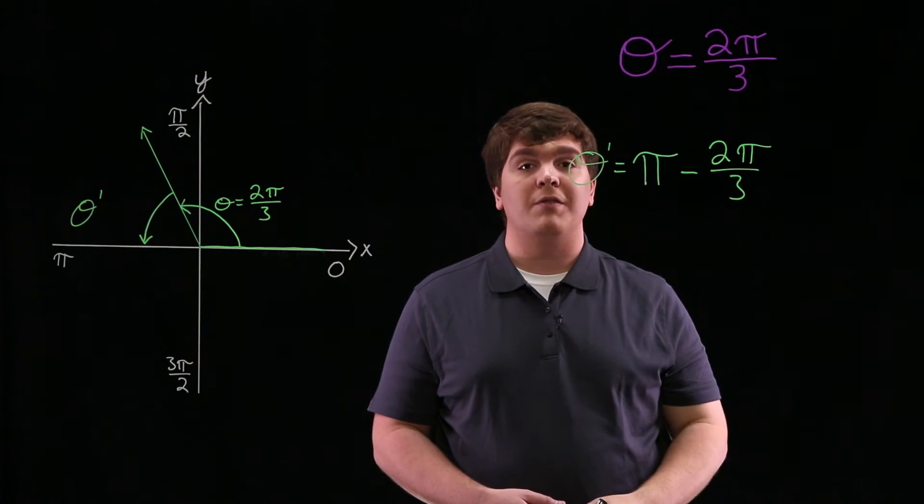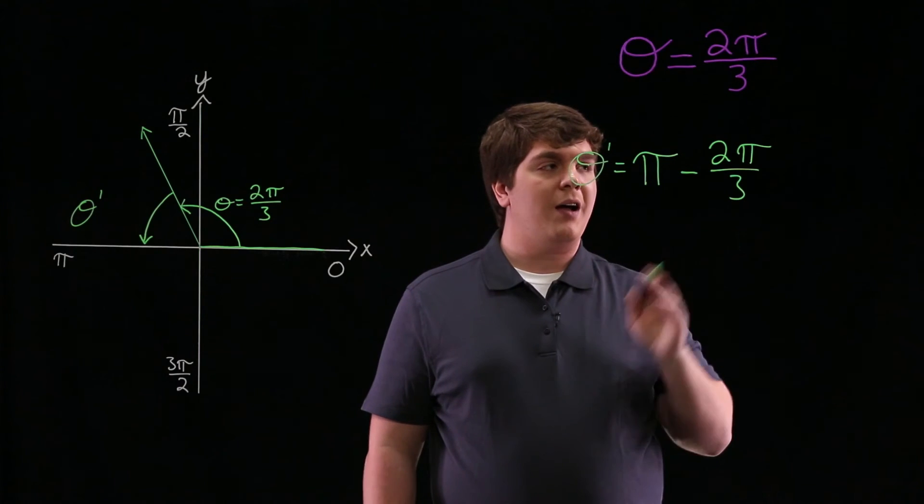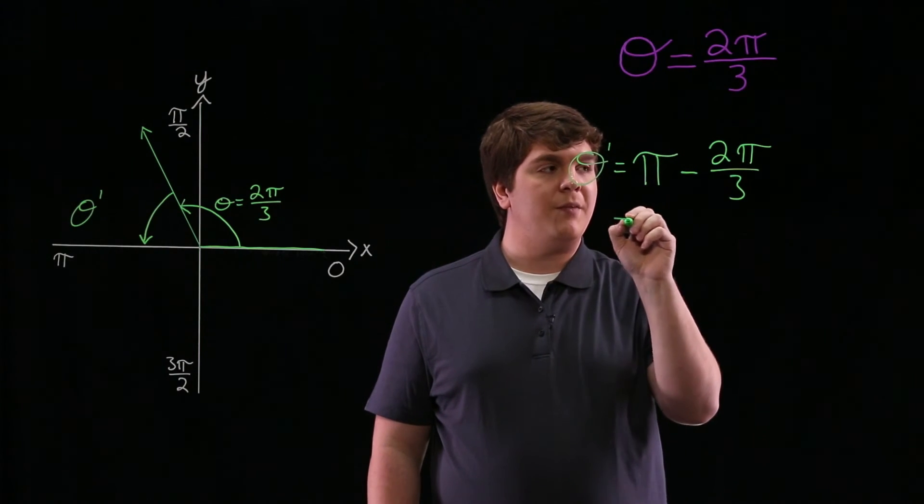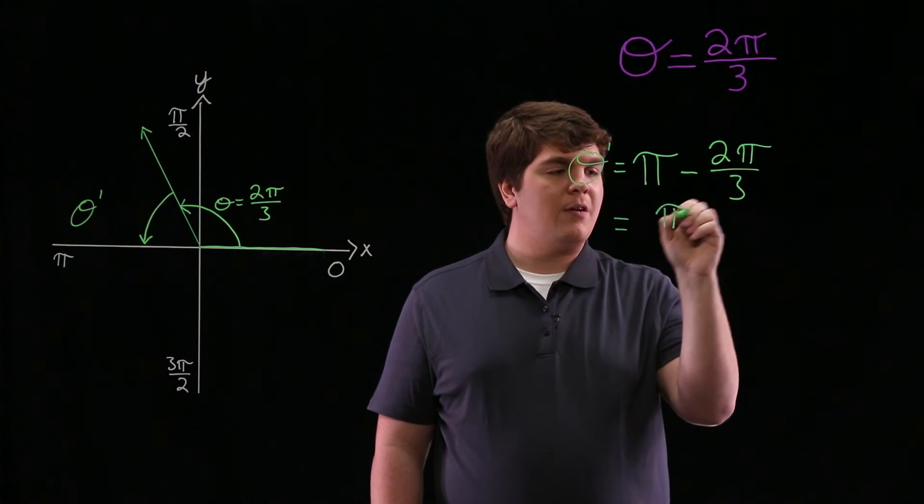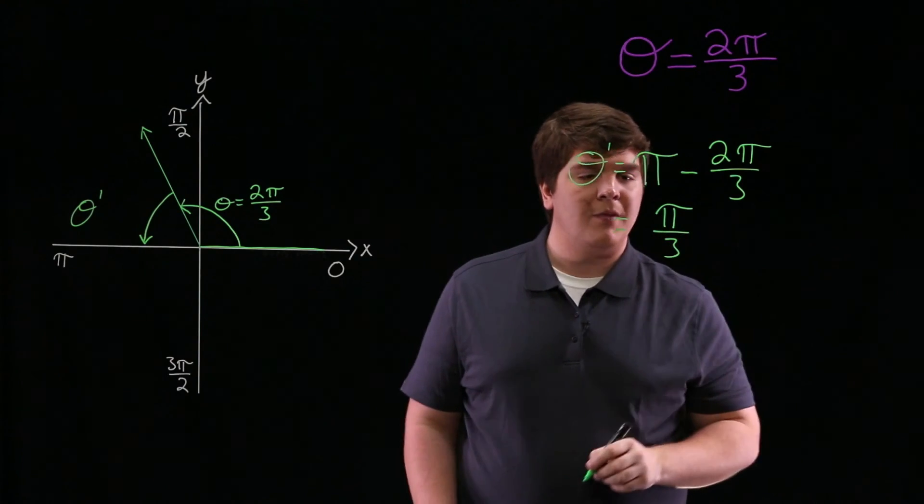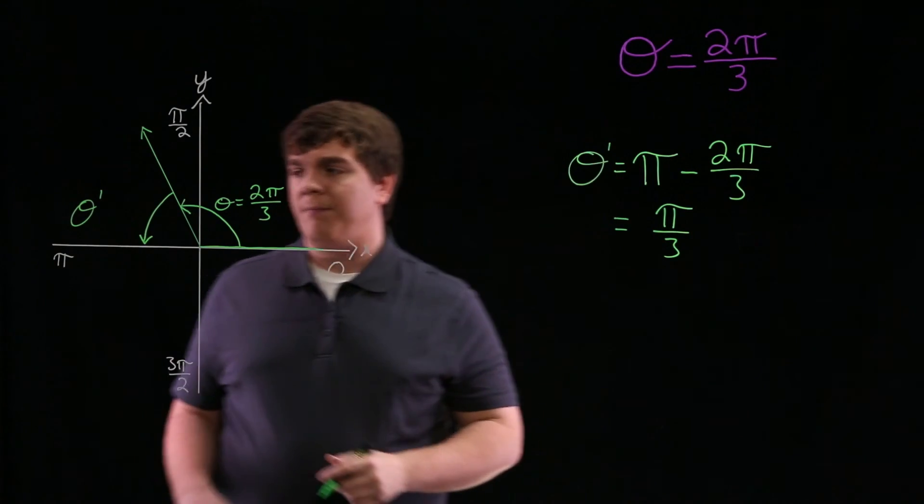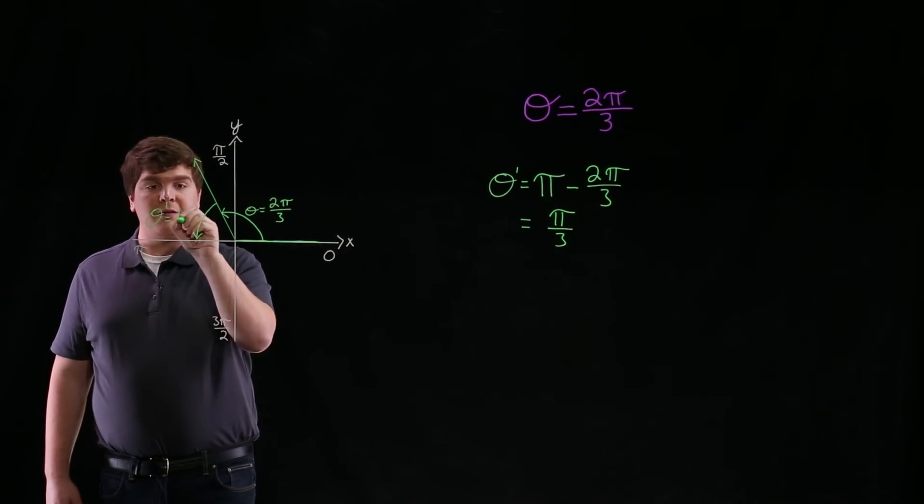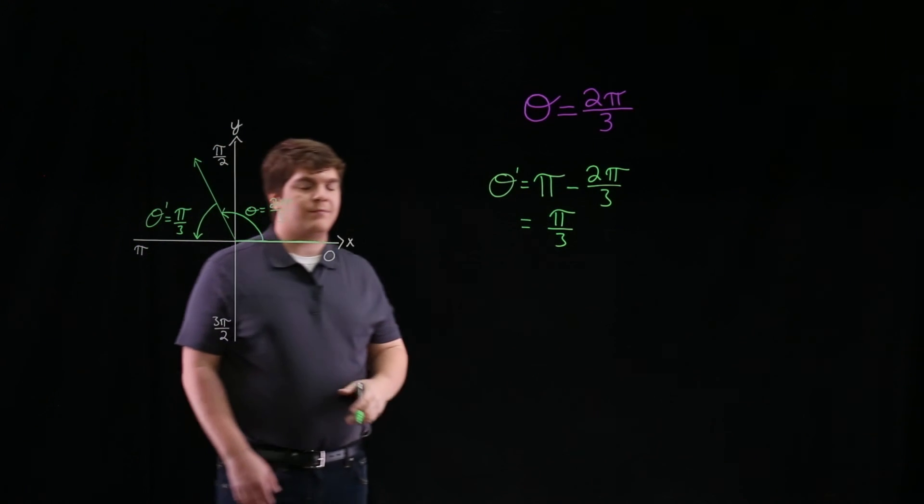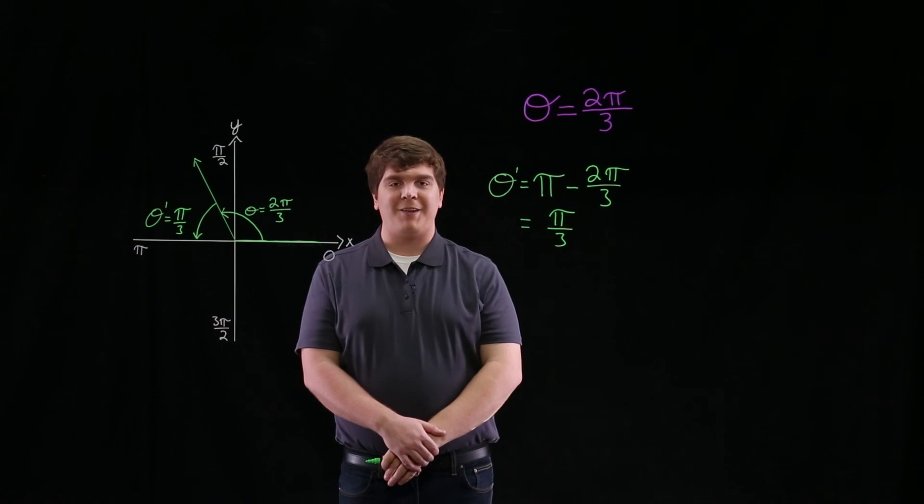So finding our reference angle theta prime is π minus 2π divided by 3, which equals π divided by 3. So our reference angle theta prime is π over 3. Thank you.